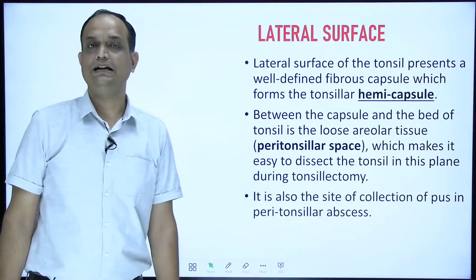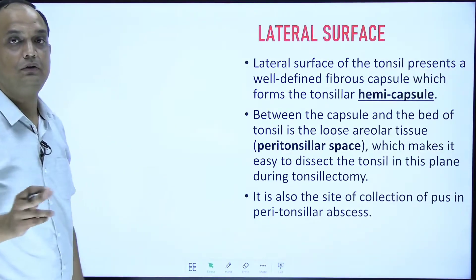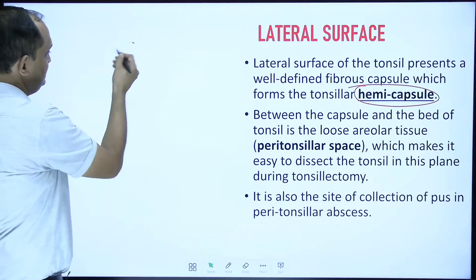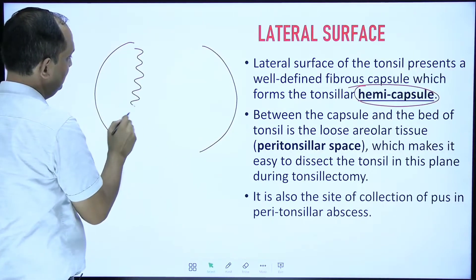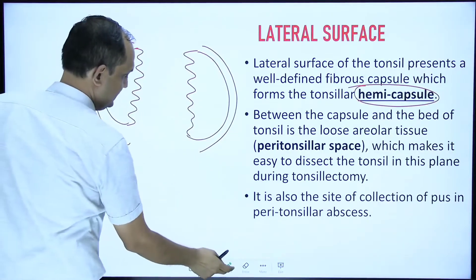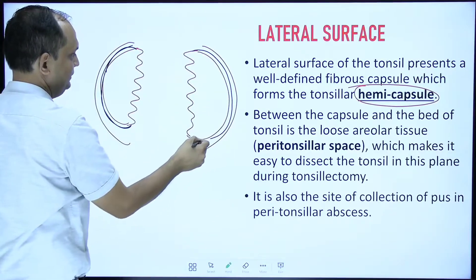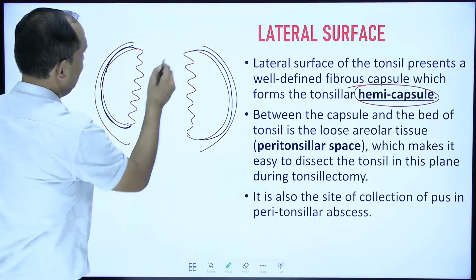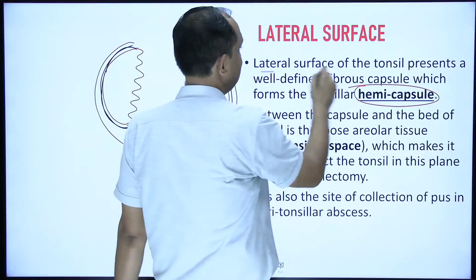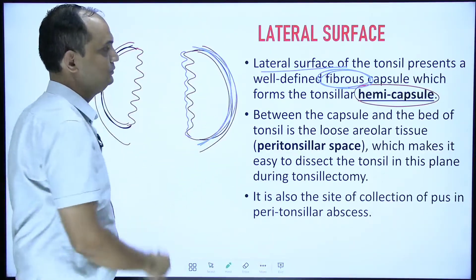The lateral surface of the tonsil is attached to the pharyngeal wall and is covered by a hemicapsule — meaning only half a capsule. The medial surface has no capsule, only the non-keratinized stratified squamous epithelium lining. The lateral surface is smooth and covered by half the capsule. The characteristic feature of the lateral surface is the hemicapsule of the tonsil.